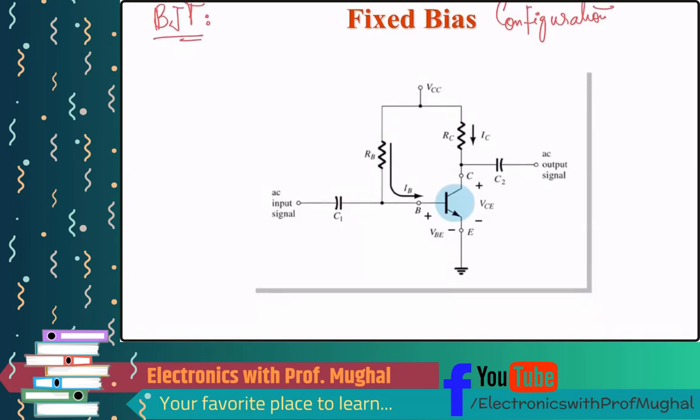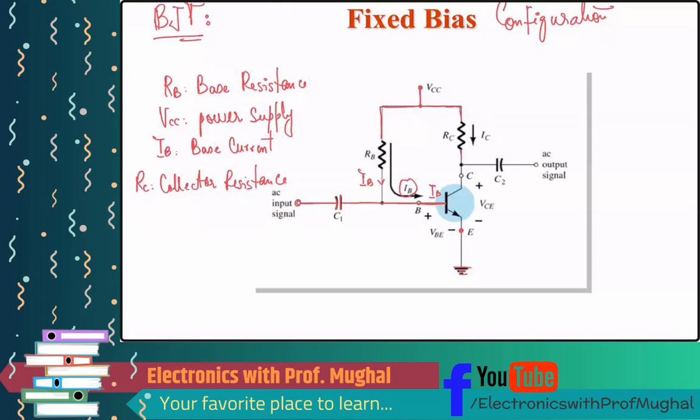In a fixed bias circuit, you have an input signal here. That input signal goes through a capacitor and then it goes to the base of the transistor. There's no emitter resistor. The emitter is just directly connected to the ground. You have power here, VCC, it goes to RB. RB is the base resistance. VCC is the supply, power supply. The current that goes through the RB resistor is IB. That's what it is over here. Also, base current is the current that goes into the base of the transistor. IB is the base current. The power supply is also connected to RC. RC is the collector resistance. And then this collector resistance, the current flowing through it is IC. IC is the collector current.